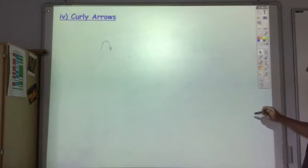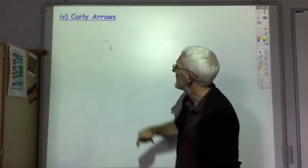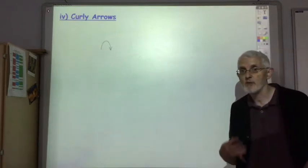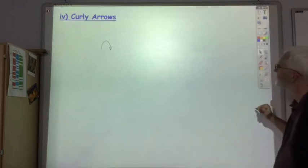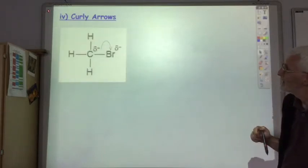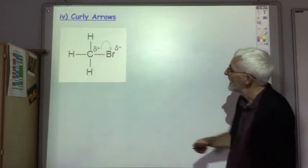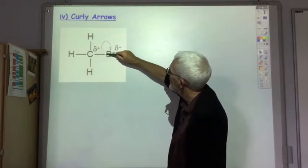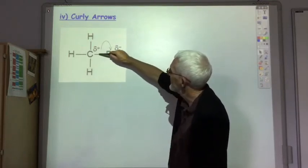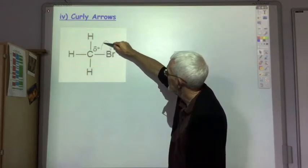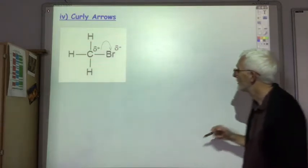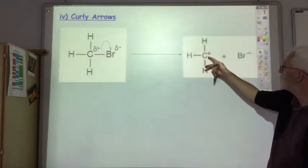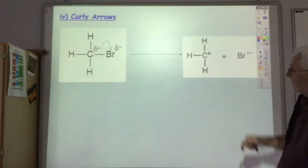Finally, I want to look at these curly arrows which we're going to use quite a lot to explain how chemical reactions are happening. In this diagram what we're showing here is the heterolytic fission of this bond here. So we're seeing the two electrons here are going on to the bromine, so the product of that would be this carbonium ion C plus and the bromide ion Br minus.